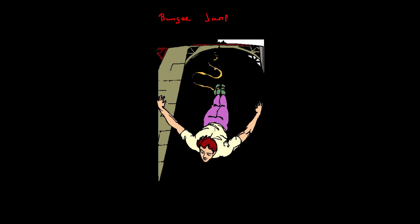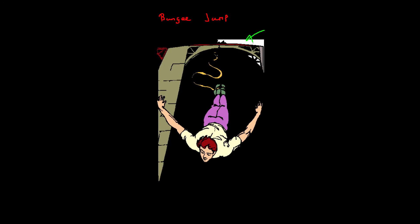Here I've got a simple diagram of a person jumping off a bridge on a bungee. When he's standing at the top on the cliff, he's going to have maximum gravitational potential energy and almost no kinetic energy. As soon as he jumps off, his gravitational potential energy is going to decrease and, as he accelerates, his kinetic energy is going to increase because he's getting faster and faster.